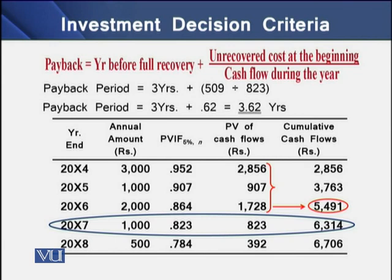For even cash inflows, like an annuity, we determine the present value of the annuity and divide the initial cash outflow by the present value of cash inflows to get the discounted payback period. For uneven cash inflows, the process is the same as for the regular payback period, except we first determine the present value of each individual cash inflow, then use cumulative present values to determine the payback period.